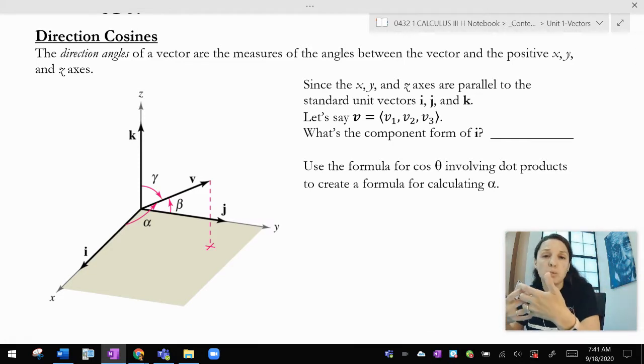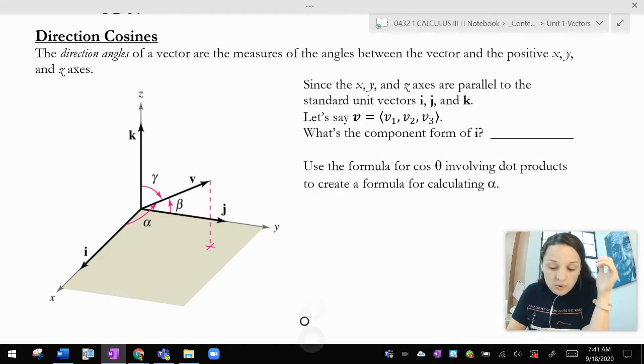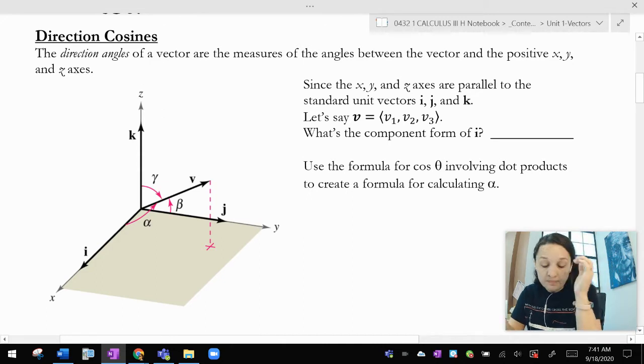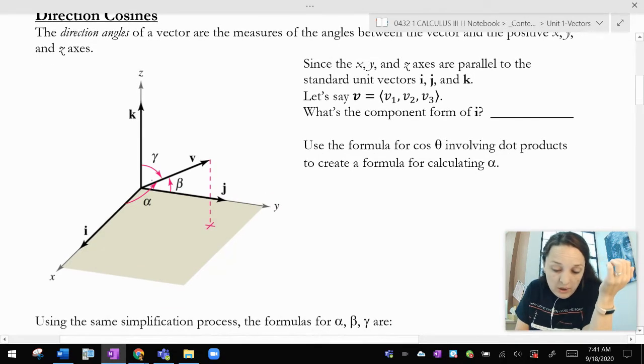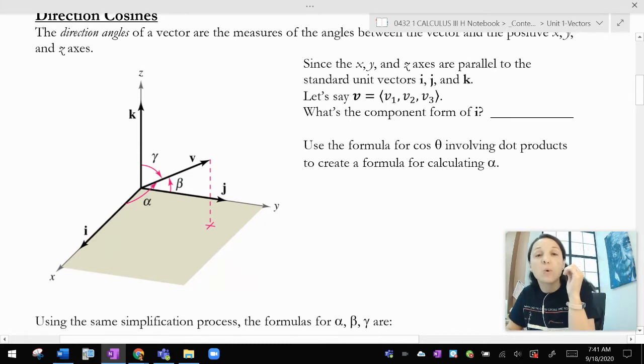So we like to measure direction either using the components of a vector or using angles. And up until now, the only angle we've really used is the angle that something makes with a positive x-axis. When we move into 3D, I can make angles with the x-axis, the y-axis, or the z-axis. And those angles are called alpha, beta, and gamma, respectively.